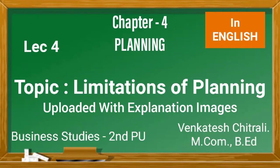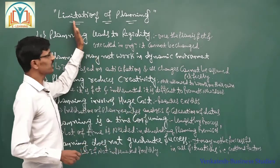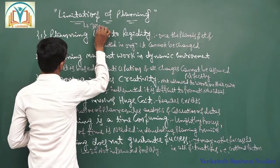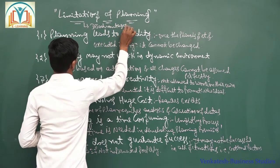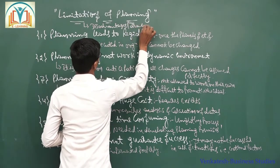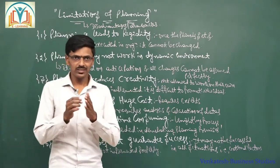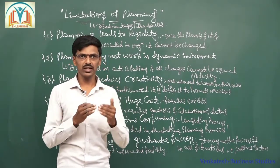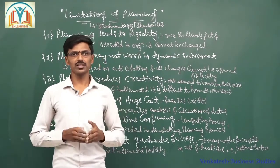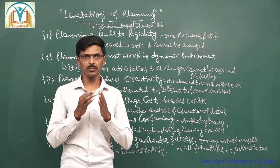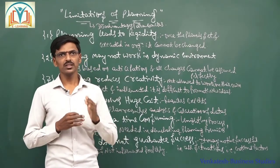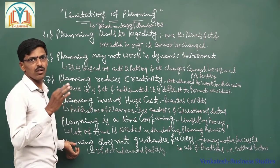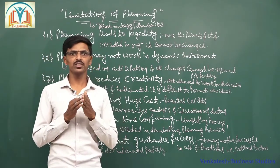The next concept in planning is the limitations of planning. Limitations are nothing but the disadvantages or drawbacks of planning. We just discussed the benefits of making plans in an organization. This concept is going to explain the problems associated with the planning function. There are mainly six problems or demerits associated with planning.